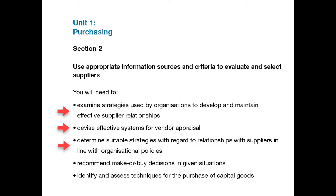On bullet point 4, make or buy is a choice between making it in-house or buying from suppliers, covering the creation of products or parts, for example, and also the provision of services such as catering or printing. You will need to describe a minimum of three situations where a make or buy decision could be made, and make a recommendation with justification.